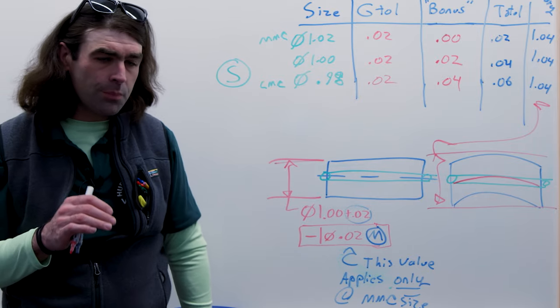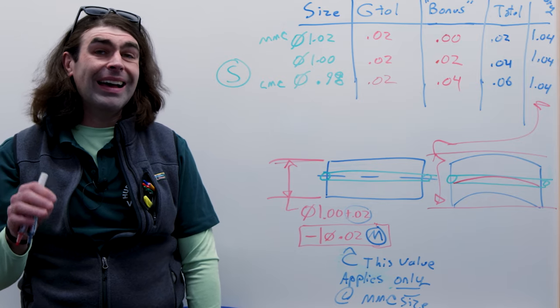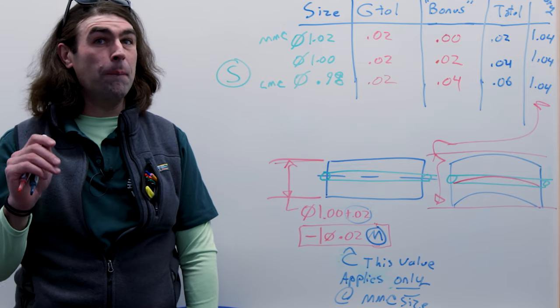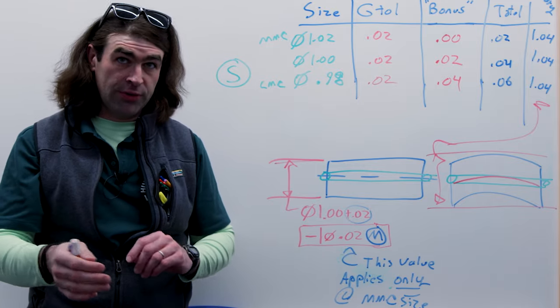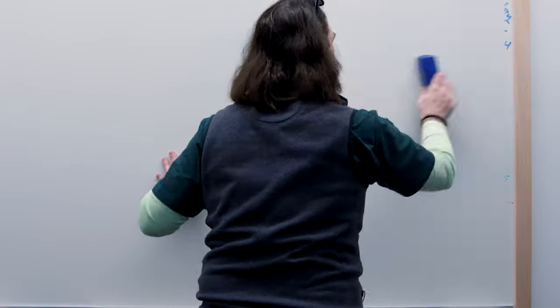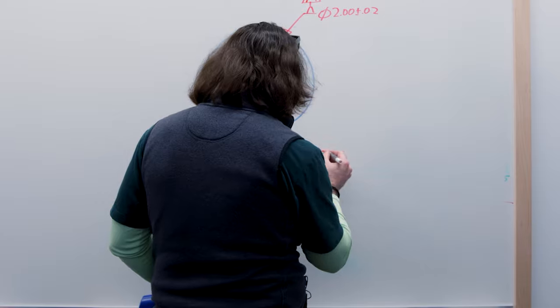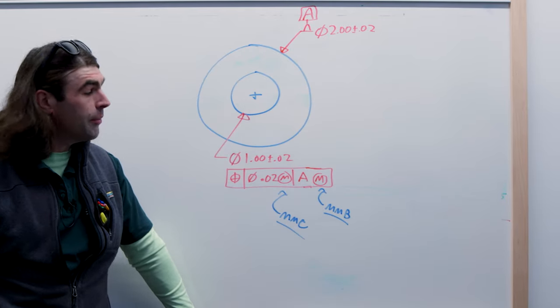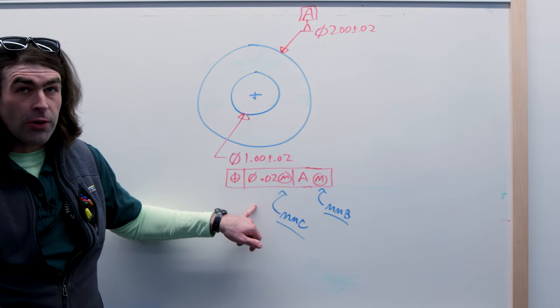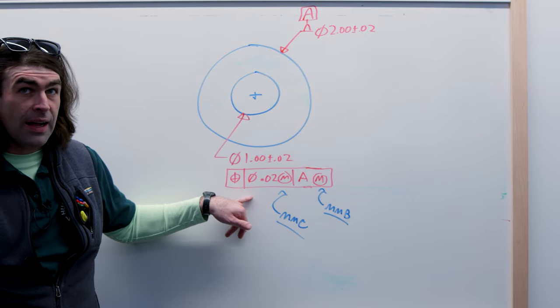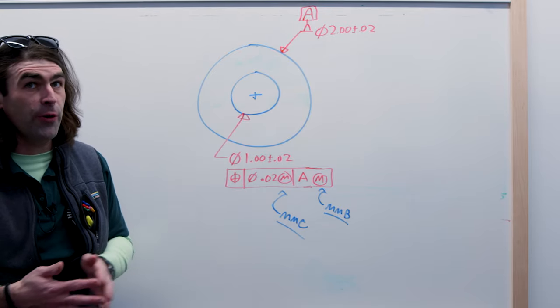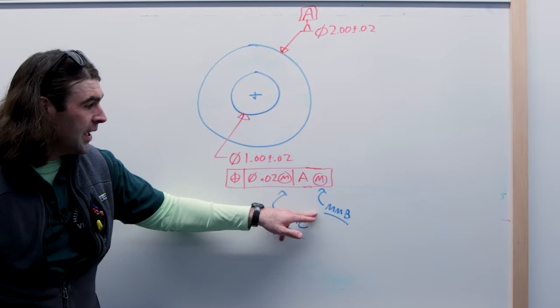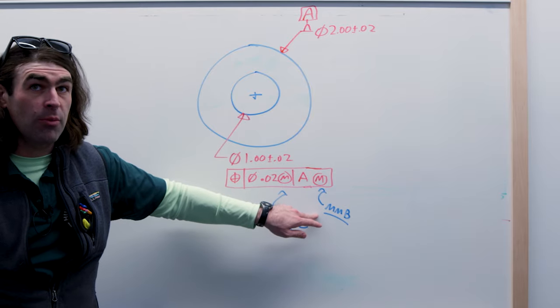Now let's look at the other use case of the MMC symbol, which is maximum material boundary. It depends where it's used. The other place you're going to see this symbol - we talked about this when it applies to the tolerance, it's going to be called maximum material condition. We discussed a little bit about what it does. It does something very different here if it's with a datum reference. It's going to be called maximum material boundary.